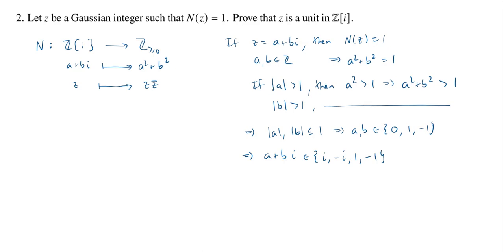All right, so this tells us that a plus bi has to be one of these four elements. And all four of these are units.